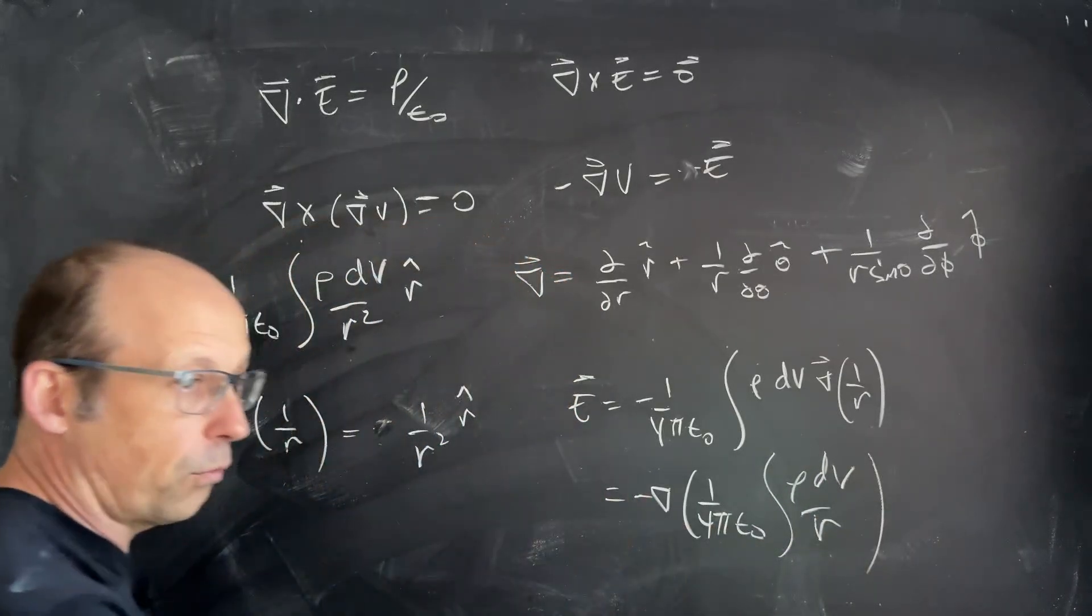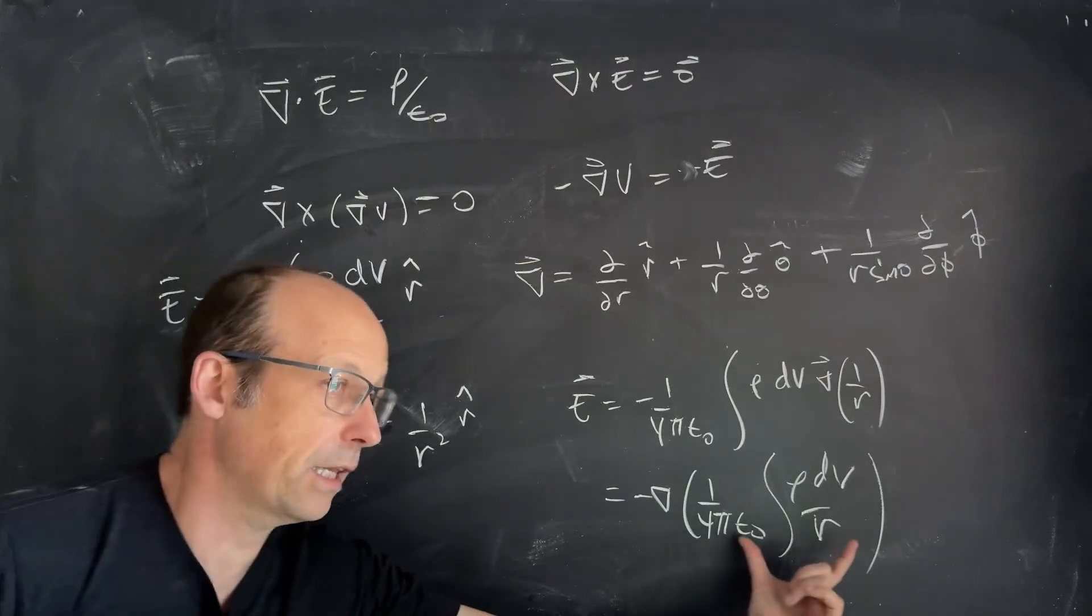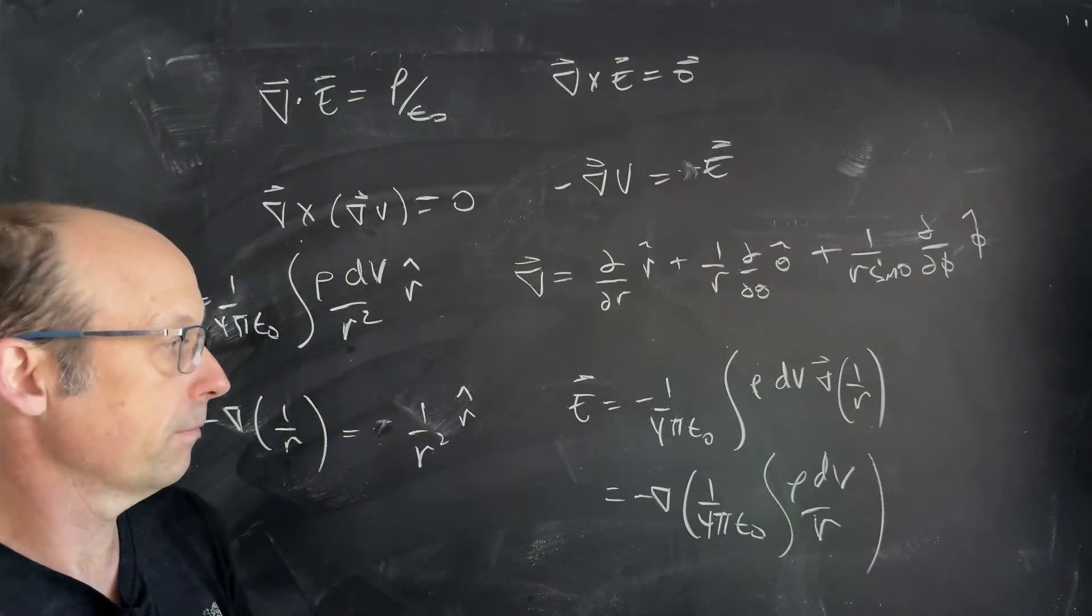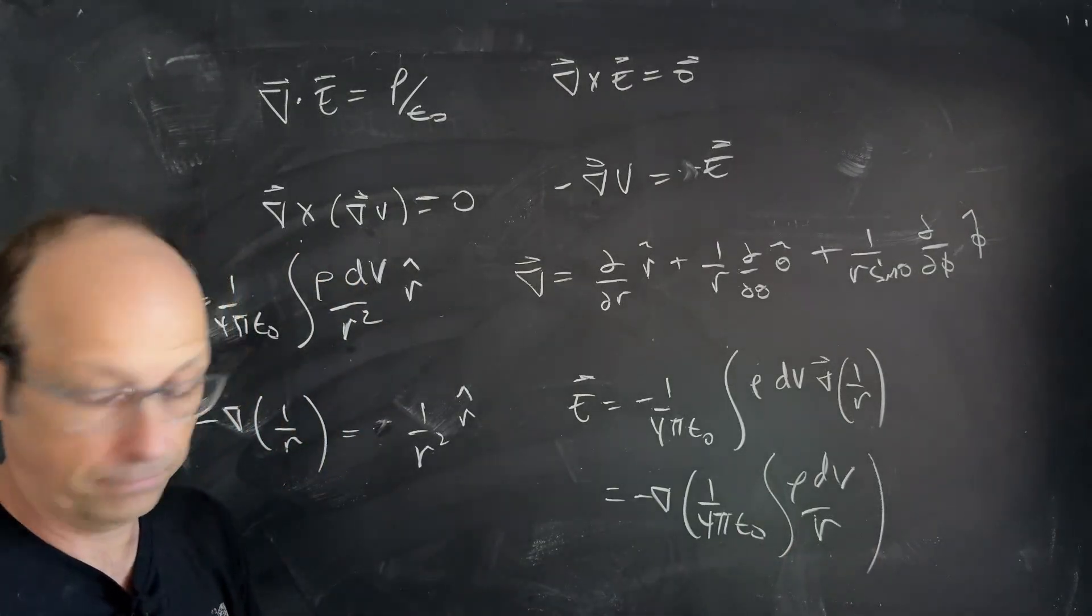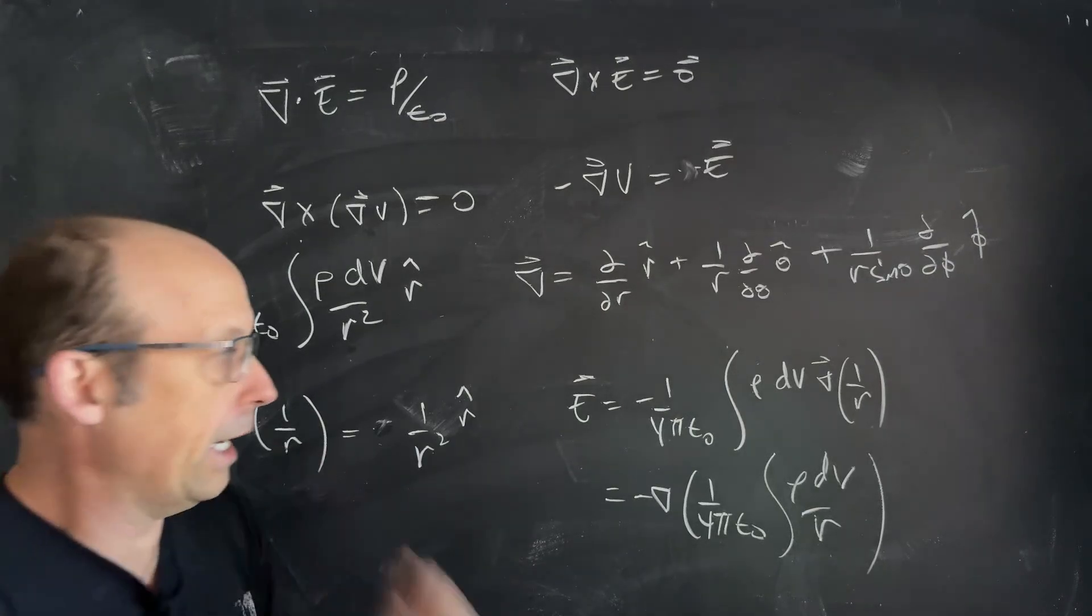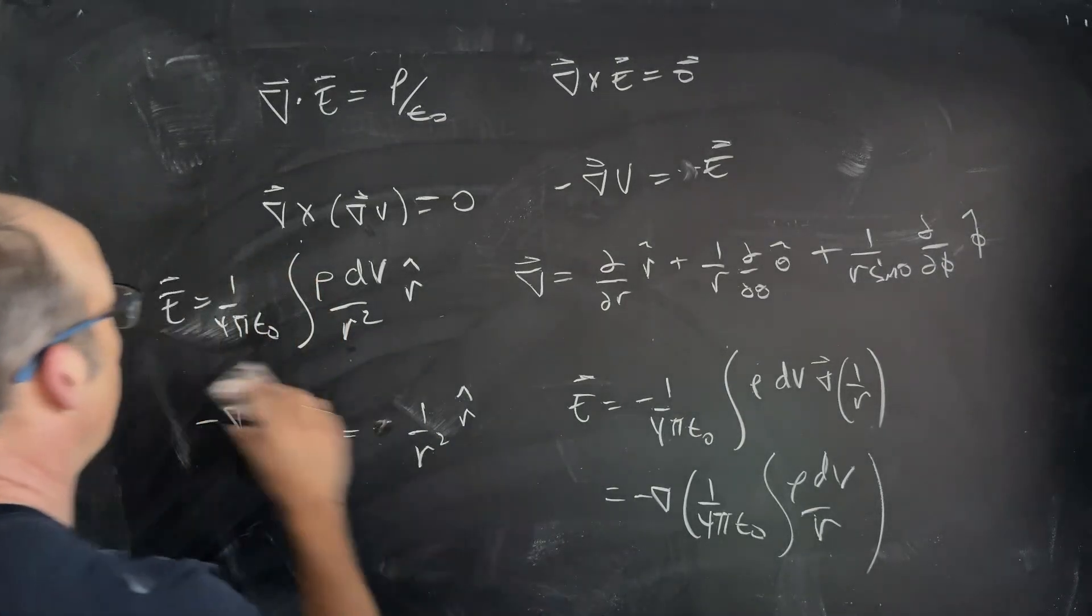And, since this is an integral and the derivative, the vector derivatives, I can switch the order, and I get negative Del one over four pi epsilon naught rho DV over R. And so, that's also why there's a negative there, right? Because there's my electric potential in differential form. Okay, now, one more thing with electric potential that's important.